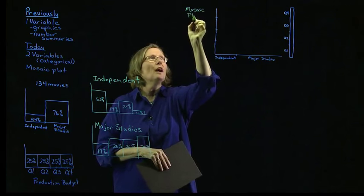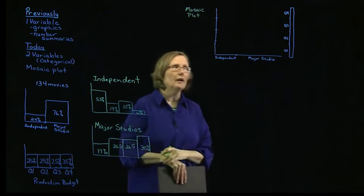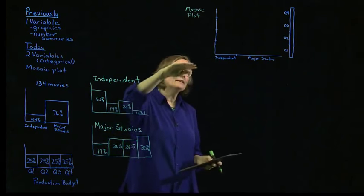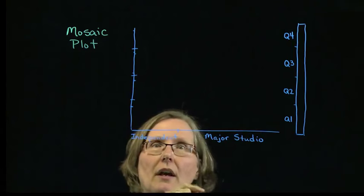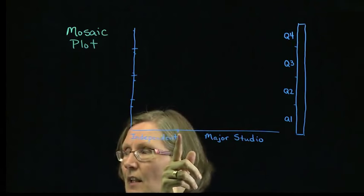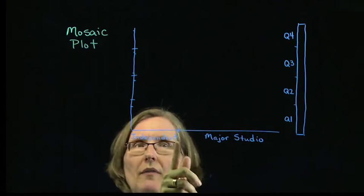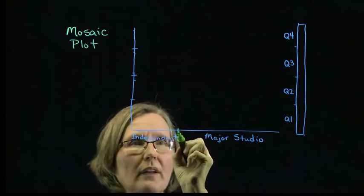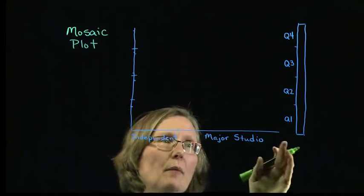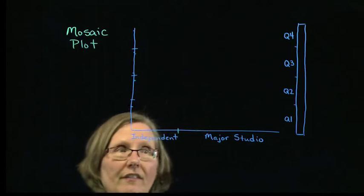A mosaic plot is really just a Venn diagram. On my x-axis, I'm going to put whether the movie was independent or a major studio. Since the independents were about a quarter of the movies, I'll put a mark there for about 24 or 25%, and the major studios will be the other 75%.